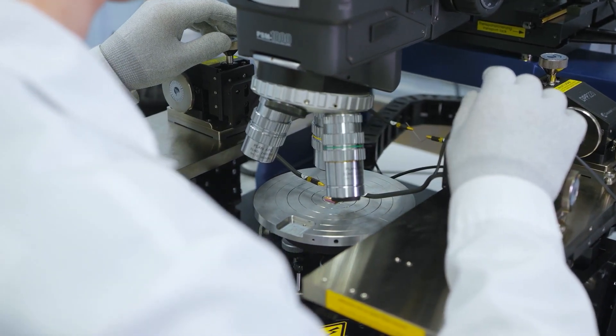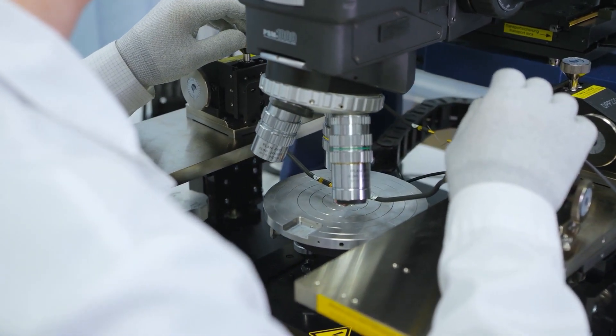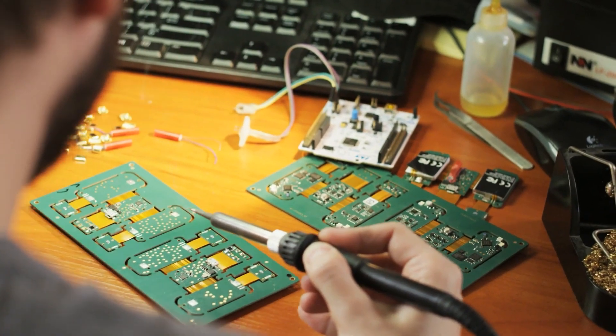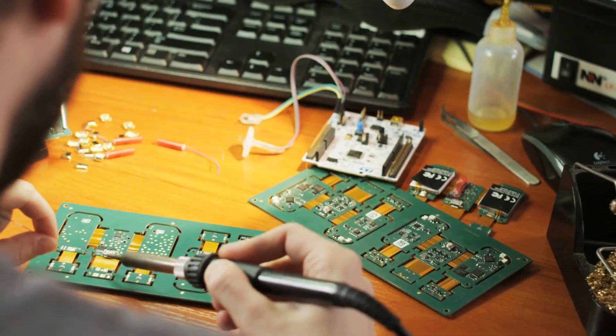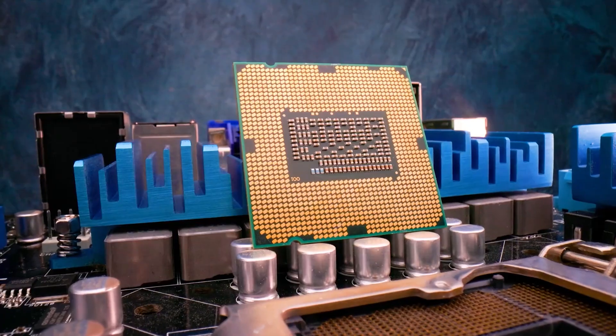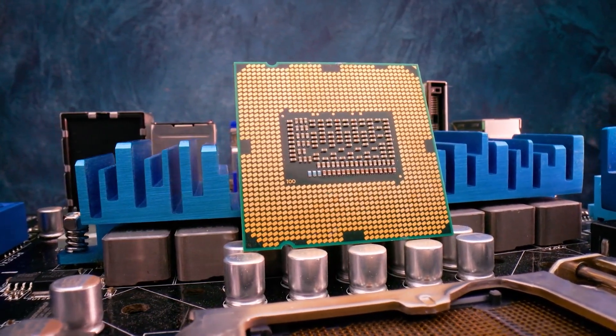The production of computer chips takes place using a method known as semiconductor manufacturing. Semiconductors are materials that conduct electricity and can be divided into two primary types, germanium and silicon, the latter of which is used for the production of computer chips.